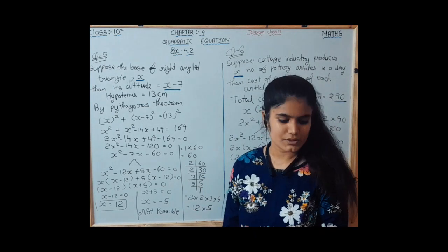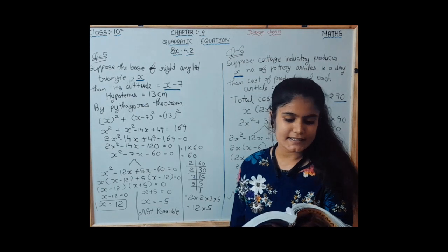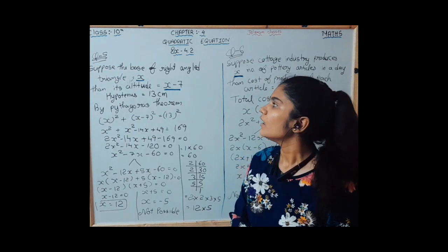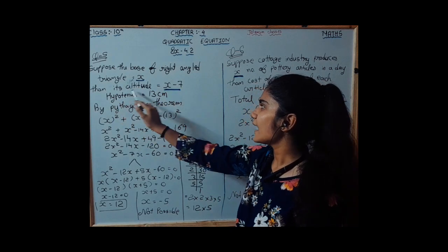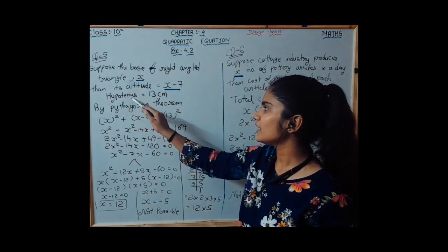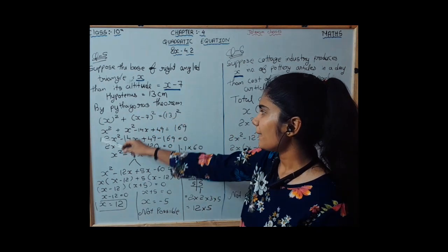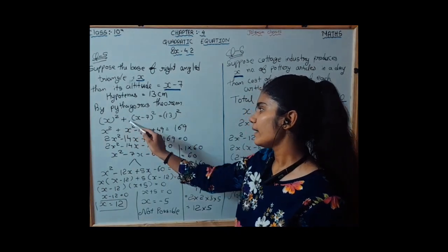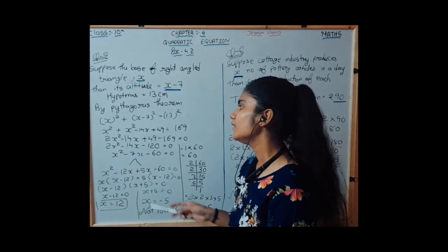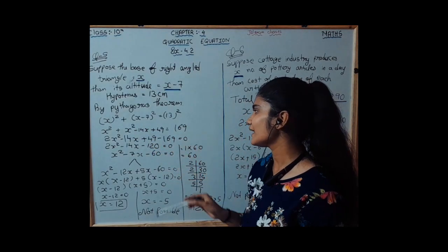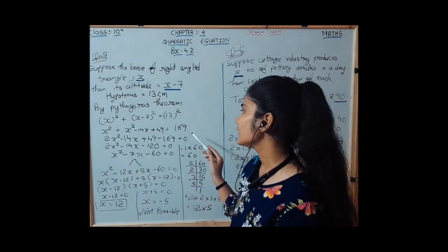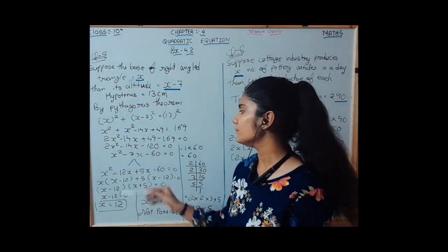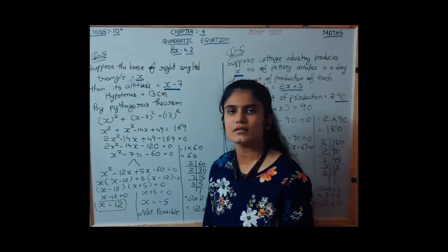Question number 5: the altitude of a right-angle triangle is 7 cm less than its base. If the hypotenuse is 13 cm, find the other two sides. Suppose the base is x, then the altitude is x minus 7, and the hypotenuse is 13 cm. By the Pythagorean theorem, x squared plus (x minus 7) whole squared equals 13 squared, giving 2x squared minus 14x plus 49 equals 169. Equating gives 2x squared minus 14x minus 120 equals 0, and dividing by 2 gives x squared minus 7x minus 60 equals 0.